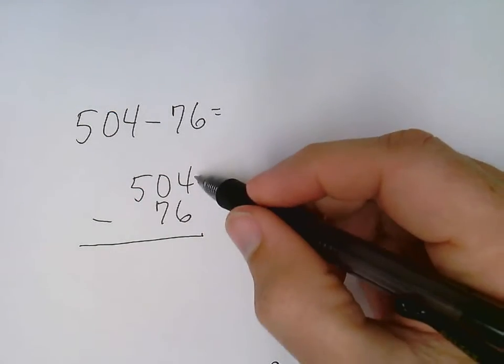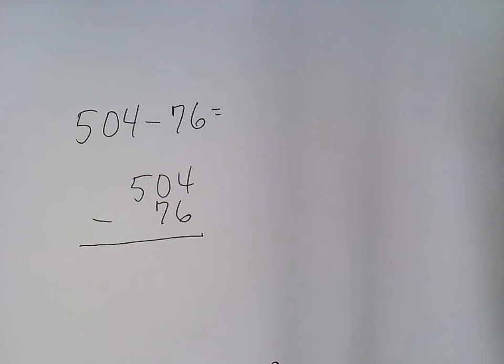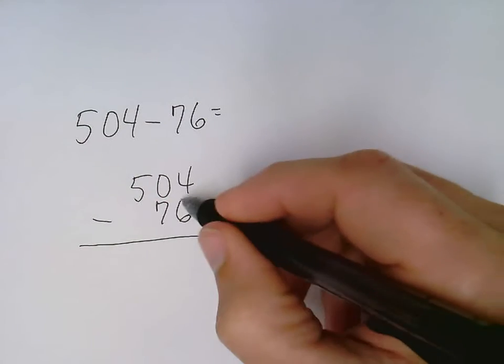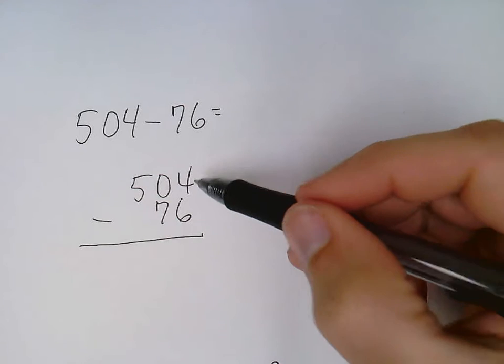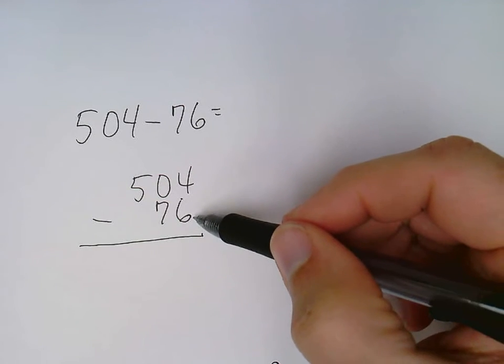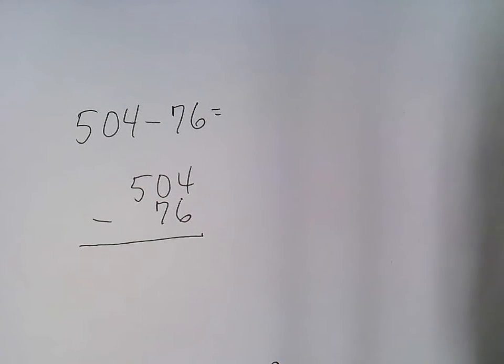I always start in the right-hand column in the ones place, and I ask myself: can I do it? 4 minus 6, can I do that? I cannot, because my bottom number is larger. If I have 4 cookies, I cannot give anybody 6 cookies, so we need to borrow from our neighbor.